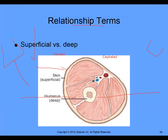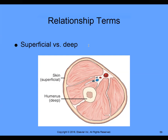We also have relationship terms: superficial versus deep. The epidermis is superficial; the humerus bone would be considered deep. Other terms: exterior, external, or outer — these are still superficial. Internal, inside, within — these refer to deep structures. For example, superficial arteries versus deep veins.